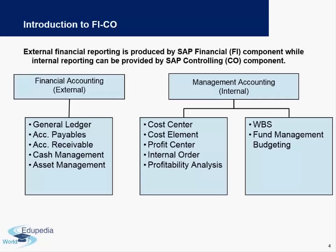Within Financial Accounting we have topics like General Ledger, Accounts Payable, Accounts Receivable, Cash Management, and Asset Management, also called Fixed Asset Management. In the Controlling module, also called the Management Accounting module, we have concepts like Cost Center Accounting, Cost Element Accounting, Profit Center Accounting, Internal Orders, Profitability Analysis, and Project Systems, which includes WBS (Work Breakdown Structures). We also have Finance Fund Management and Budgeting, and we will cover these topics in detail going forward.